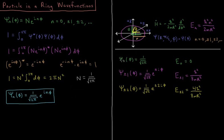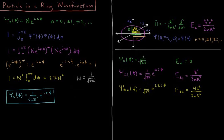For the ground state, n can be any integer, and since energy depends on n squared, the lowest energy corresponds to n equals 0. So psi sub 0 of phi equals 1 over the square root of 2 pi, since e to the 0 is just 1. This wave function is flat — the particle is equally likely to be found everywhere — and the energy of that state is equal to 0.